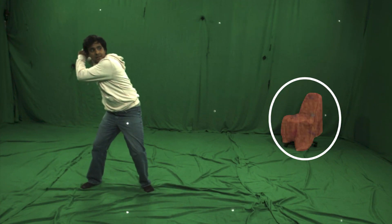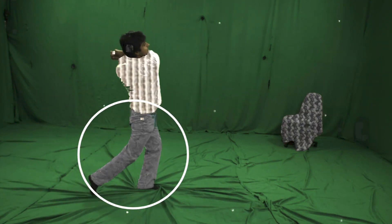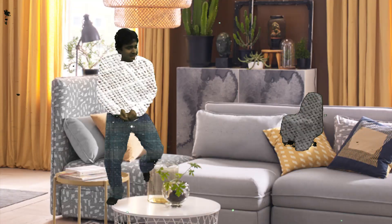We can independently augment the chair, the upper body, the lower body, and the background to increase the appearance variability of our dataset.